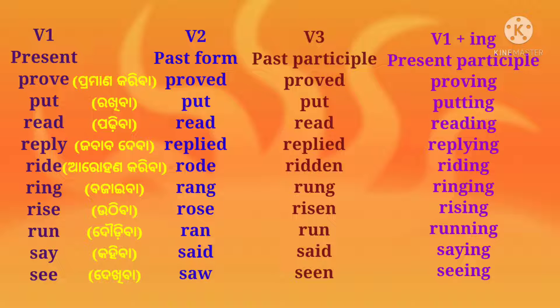Rise (uthiiba): second form — rose; third form — risen; fourth form — rising. Run (daudiba): second form — ran; third form — run; fourth form — running. Say (kohiba): second form — said; third form — said; fourth form — saying.